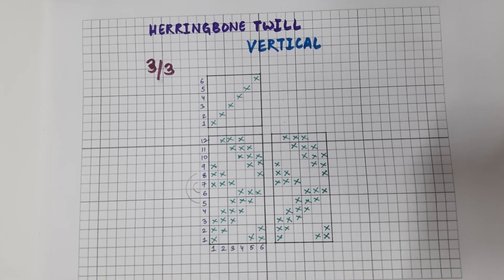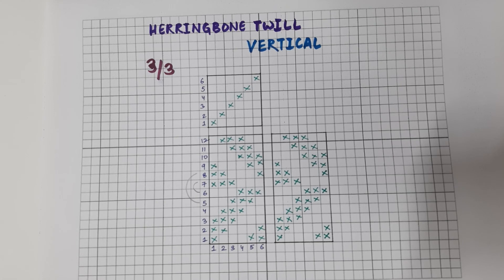So now you know how to draw the design, draft and the peg plan of a three up, three down vertical herringbone twill. If you have any more questions, drop them in the comments below. Stay tuned as we come up with our next video — until then, stay safe and stay connected.